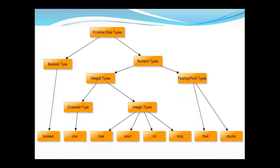If you look into this figure, primitive data types are divided into various types. Primitive data types are divided into boolean type and numeric types.